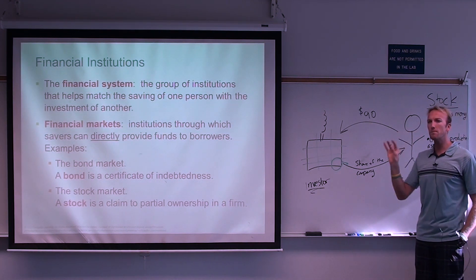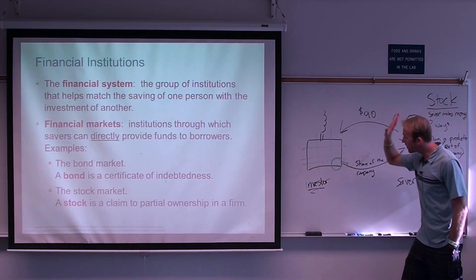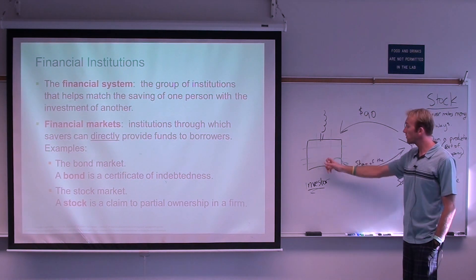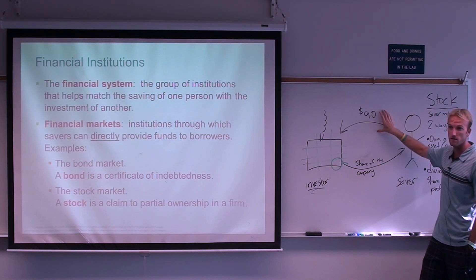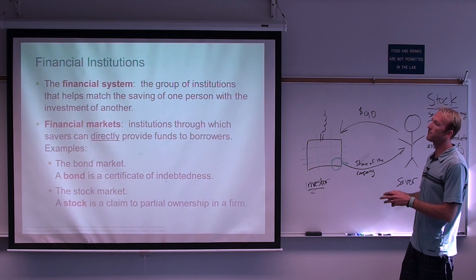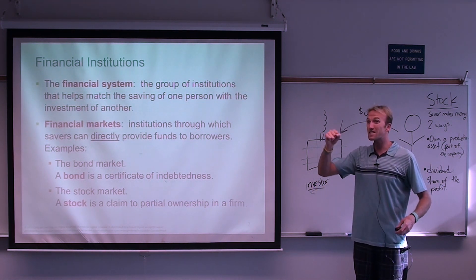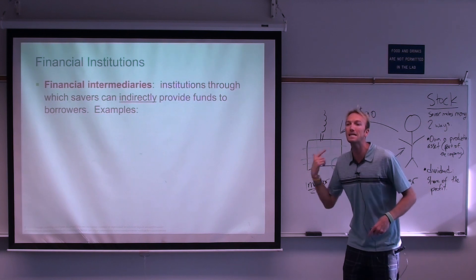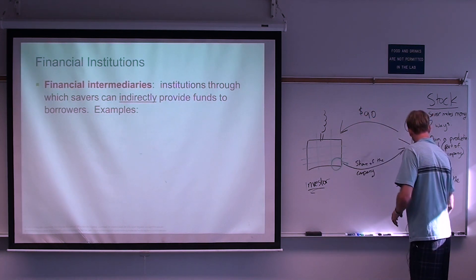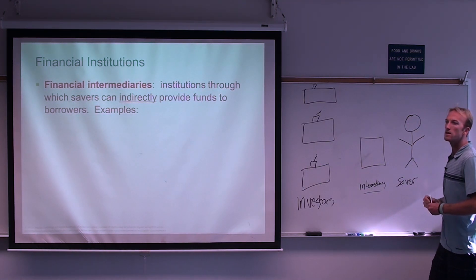Both the stock market and the bond market have a risk: if the company goes under or goes out of business, you don't get anything and you lose your original savings. Because of that problem, there arose a second type of branch in the financial system. There are financial markets where you deal directly with the investors, and then there are financial intermediaries, where you deal with the middleman, and the middleman deals with the investors.